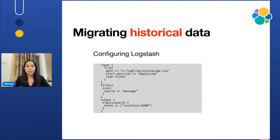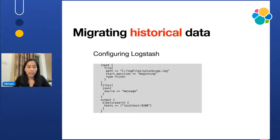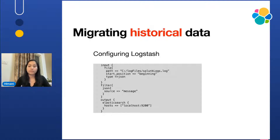Since we have the logs written to files, we can configure Logstash to read the data from those files. The path can be specified in the input plugin, and we can also specify Grok patterns inside the filter plugin. In the output plugin, we give the Elasticsearch nodes — it could be multiple nodes if it's a cluster. That's how we migrate the historical data.